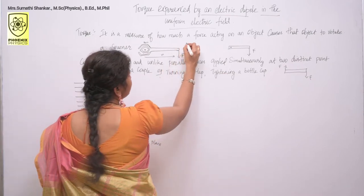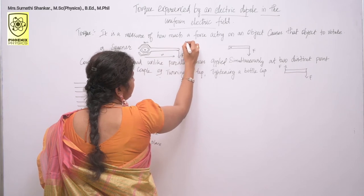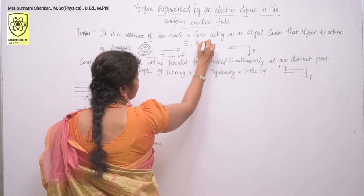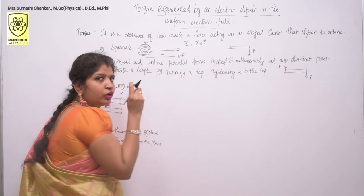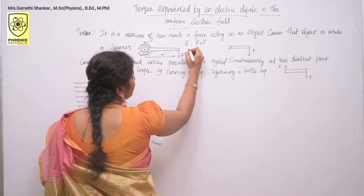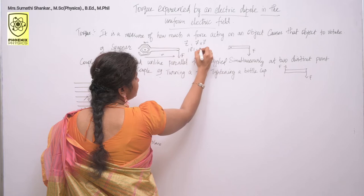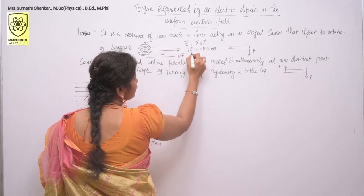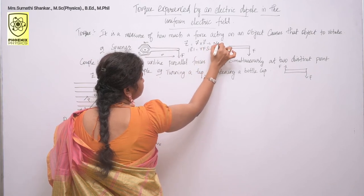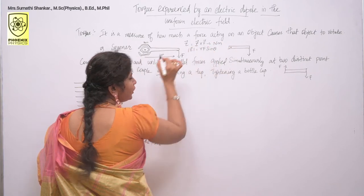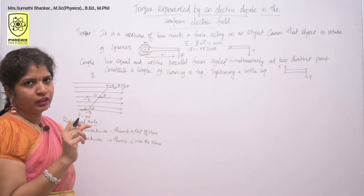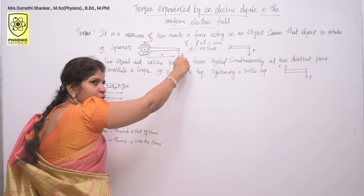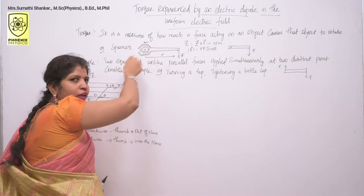Torque is denoted by the letter tau. Tau is a vector quantity. Tau is equal to R cross F. The magnitude of the torque can be written as R F sin theta, and the unit for tau is Newton meter. R is nothing but a distance. An example of torque is a spanner — we rotate the spanner in the clockwise direction to tighten a nut.